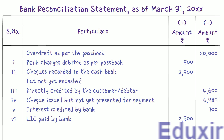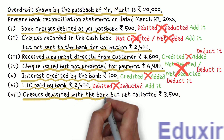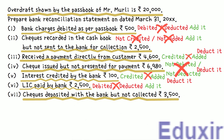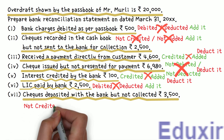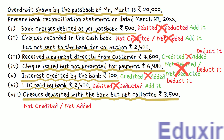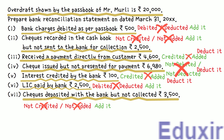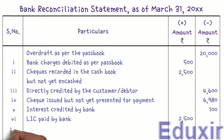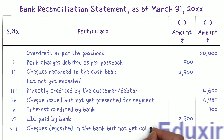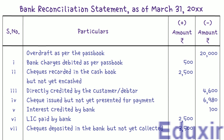Item 7: Checks worth 3,500 rupees are deposited in the bank but not yet collected. The business debits this check amount in the cashbook before depositing the checks. However, due to the timing difference, these deposited checks were not yet credited in the bank passbook as they were not yet collected. So we need to add this amount to the passbook balance. We write 'Checks deposited in the bank but not yet collected' and enter 3,500 rupees in the plus amount column.